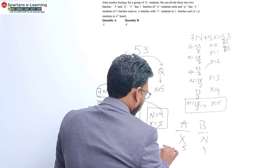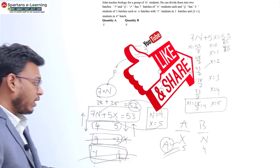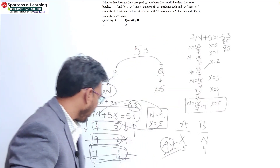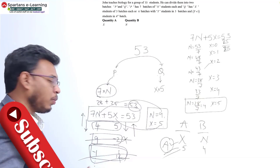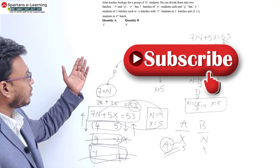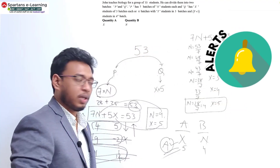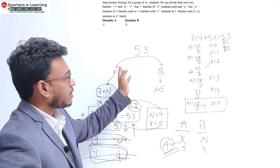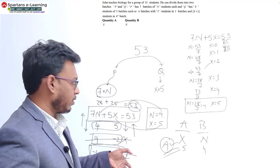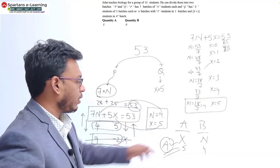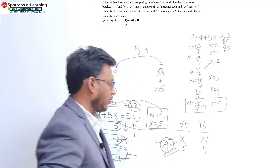Some may argue that negative values like minus one and twelve are mathematically valid, but in practical terms these are not possible. If the question used abstract variables, negatives could apply — but clearly X and N represent numbers of students, so you can't take negatives or decimals. The only possible answer is N equals 4 and X equals 5. Quantity A is X equals 5, Quantity B is N equals 4, so Quantity A is greater. The answer is option A.